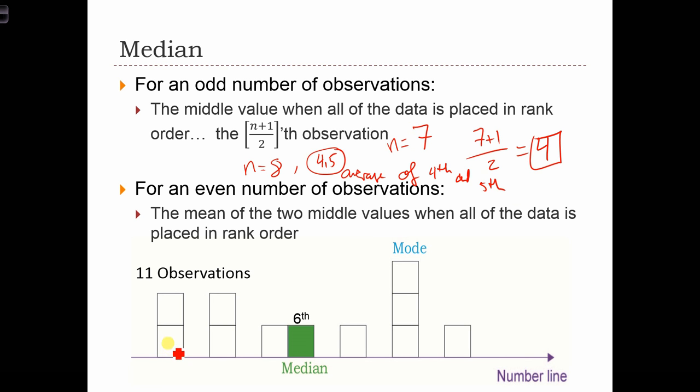In this example down below, we have 11 observations drawn out in some kind of histogram where we've got the data values across the bottom. Say this is 0, 1, 2, 3, 4, 5, and 6. So those are our data values. And the height here is the frequency. So each box is a count of one observation. So we've got two zeros in our data set, two ones, a two, a three, and so on.